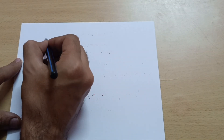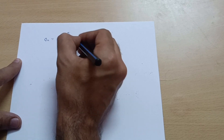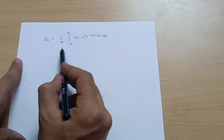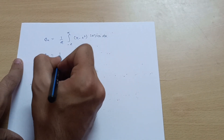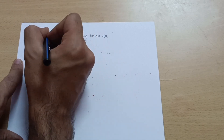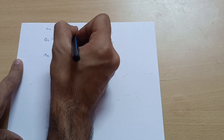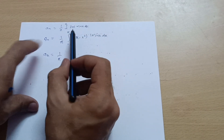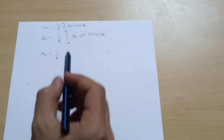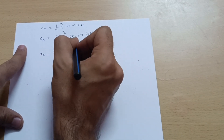Now we calculate aₙ. The formula is aₙ = (1/π) ∫₋π^π f(x) cos(nx) dx. Substituting f(x) = x − x², we get aₙ = (1/π) ∫₋π^π (x − x²) cos(nx) dx. We solve this using Bernoulli's rule of integration.